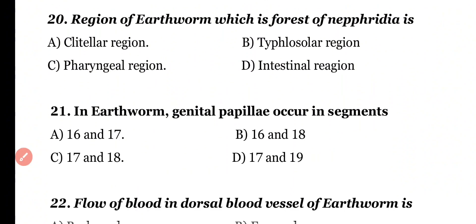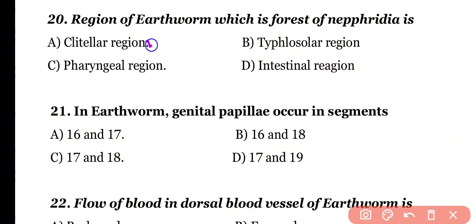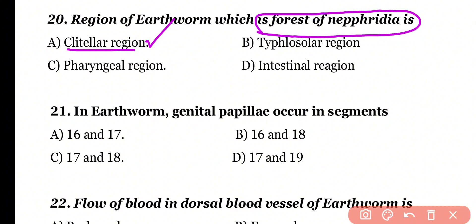Question number 20. The region of earthworm which is the forest of nephridia is: clitelial region, typhlosolar region, pharyngeal region, or intestinal region. Correct answer is option A. From the 7th segment to the last segment, the area is called the clitelial region, and this region has the maximum number of nephridia, known as the forest of nephridia.